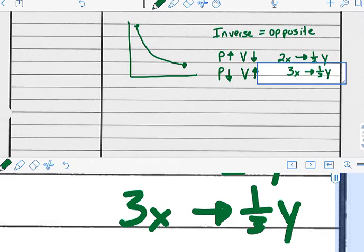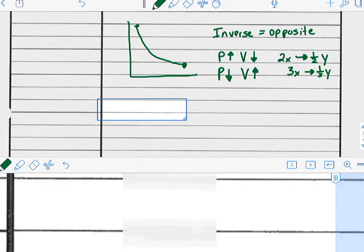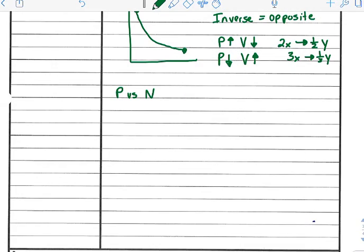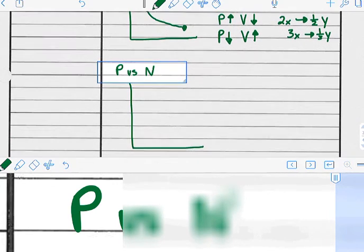Okay. So then the next relationship we want to look at is pressure and number. So I'm using N for number. The number of particles, that's how much gas we have.